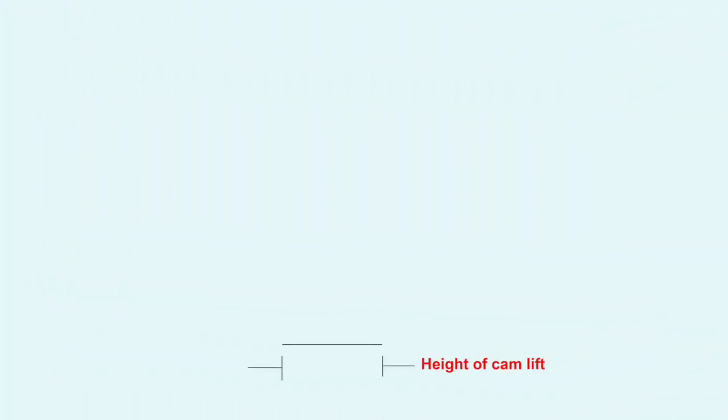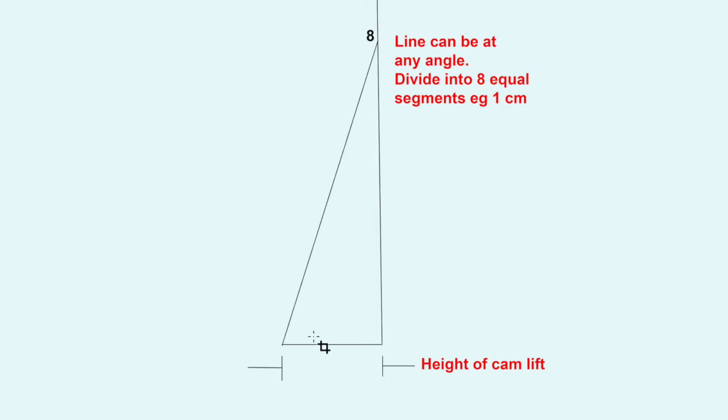That's the height of the cam lift. We're going to divide this into eight segments and work out how far the cam will lift every eighth. We want to divide this line into eight segments. Draw a vertical line and another line that can be any arbitrary angle, anything that can be conveniently divided up into eight. I decided I'd have divisions of one centimeter, so I made the line eight centimeters long.